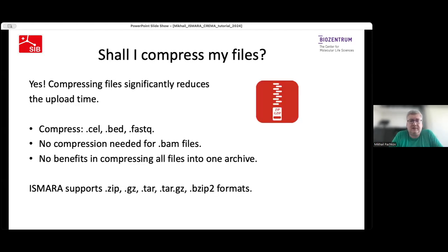Does it make sense to compress everything as much as possible? Certainly, it makes sense for CEL, BAT, and FASTQ files, because compressing these files can significantly reduce file size, minimizing upload time and the probability of network errors. It makes no sense to compress BAM files because they are already compressed. Also, there's no benefit to putting all files into one big archive — if you have a bunch of individually zipped FASTQ files, please don't bundle them into one big zip file.